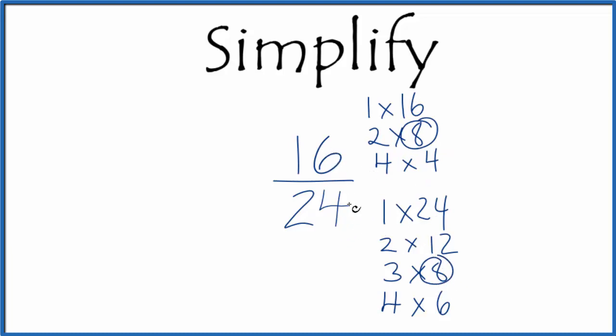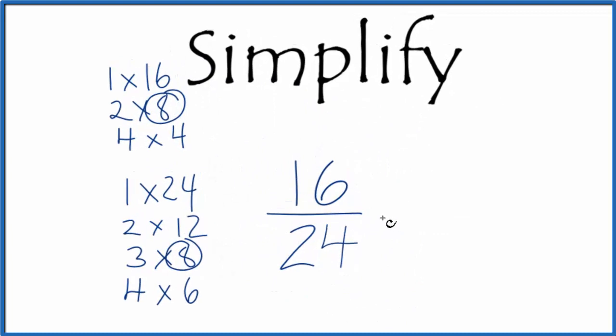So we'll divide the numerator and the denominator, both of those, by 8. Let's move this, give ourselves some room. So 16 divided by 8 gives us 2, and 24 divided by 8, that gives us 3.